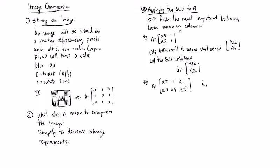Now here all of the columns are approximately multiples of 1 over root 2, 1 over root 2.